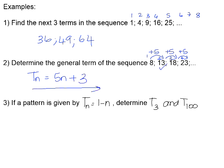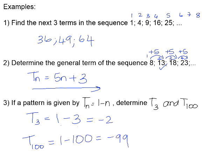Number 3: if a pattern is given by T(N) = 1 − N, determine T3, the value of the third term, and T100, the value of the 100th term. To do that, we substitute the value of N. 1 − 3 = negative 2, and 1 − 100 = negative 99.